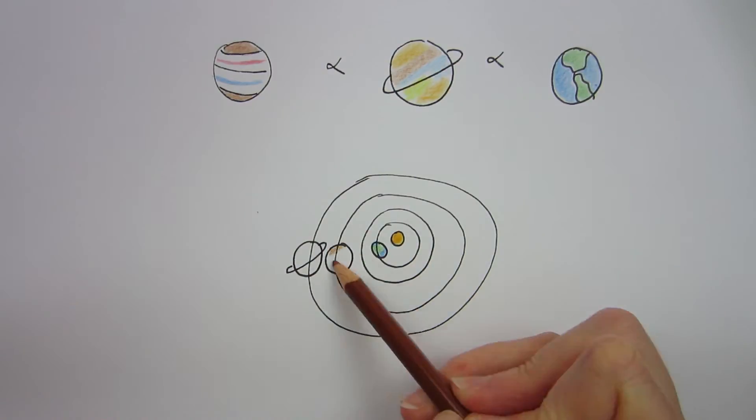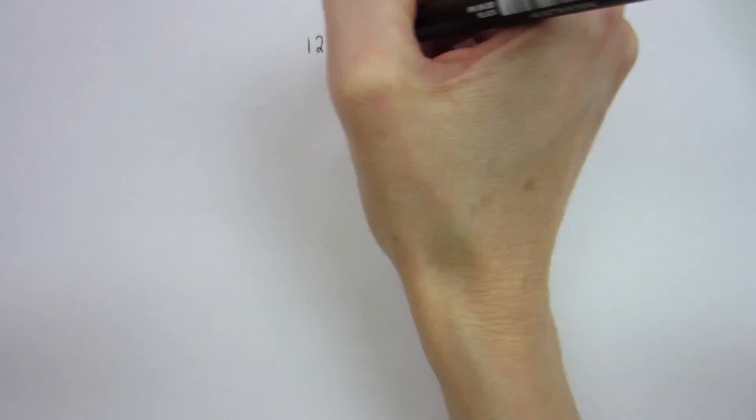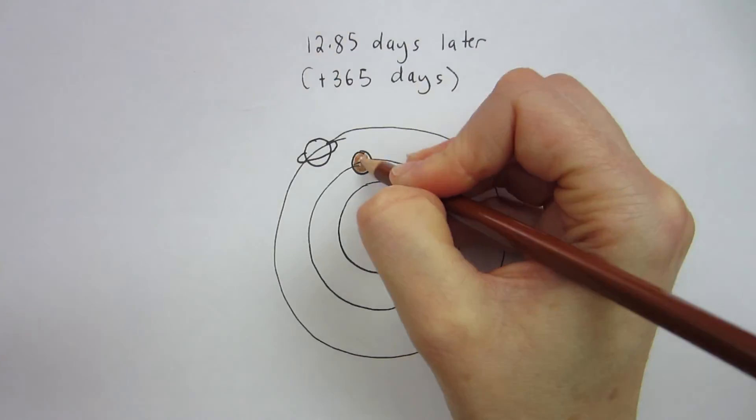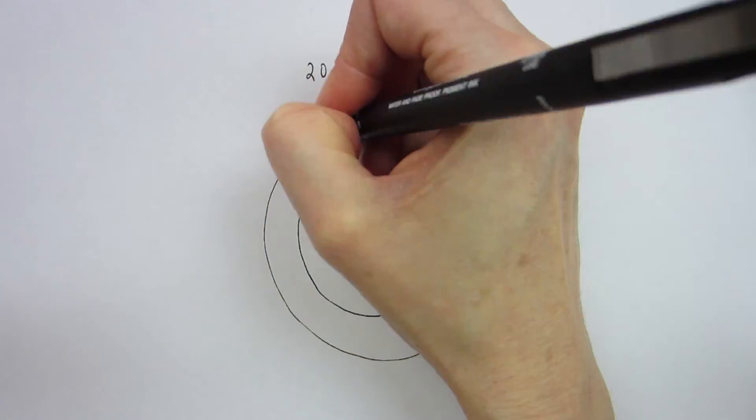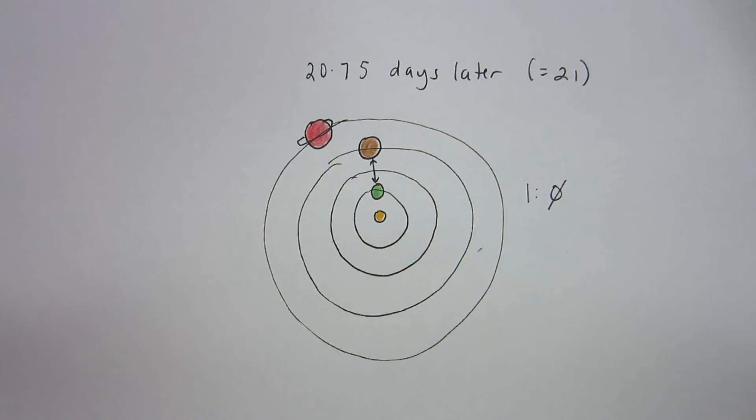If we line up Earth, Jupiter and Saturn, one year and 12.85 days later, the Earth is exactly between Saturn and the Sun. 20.79 days later, the Earth is exactly between the Sun and Jupiter, corresponding to the golden ratio.